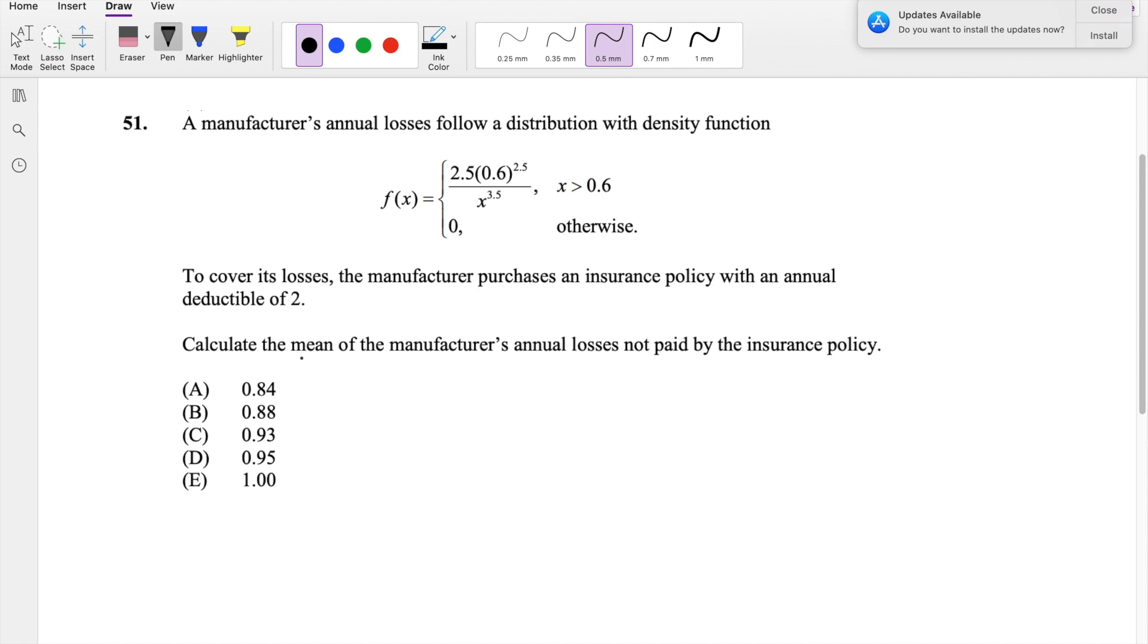So they ask you to find the mean, which is exactly the same thing as expectation, right? They ask you to find expectation of manufacturer's annual loss not paid by the insurance policy. So from 0 to 2, they have to pay everything out of pocket, right? Because there's a deductible of 2. So whatever from 0 to 2, the amount of annual loss not paid by the insurance company is just going to be the whole loss because the insurance company is not paying for anything.